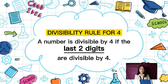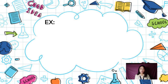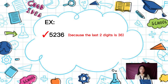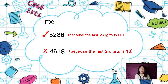A number is divisible by 4 if the last 2 digits are divisible by 4. For example, 5,236 is divisible by 4 because the last 2 digits are 36. On the other hand, 4,618 is not divisible by 4 because 18, the last 2 digits, is not divisible by 4.